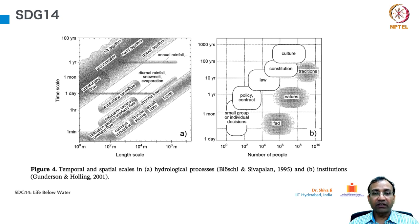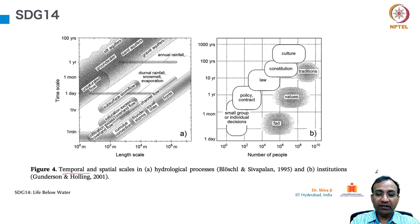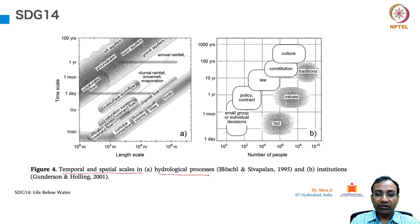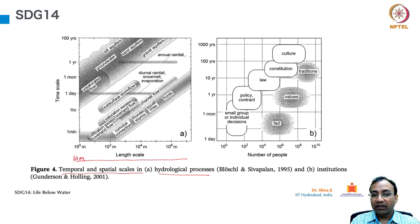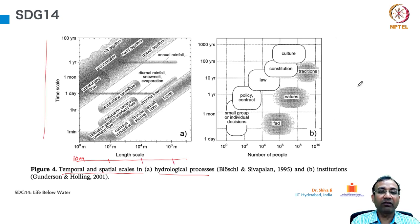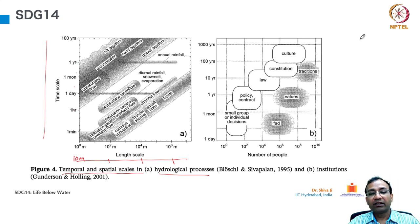This is an interesting table which talks about temporal and spatial scales in hydrological processes. The length scale goes from 10 to the power 0 (10 meters) to 10 to the power 6 meters. On the time axis we have 1 minute, 1 hour, 1 day, 1 month, 1 year, and 100 years. On what time scale and at what length scale do we call water bodies by certain names and what forms do they take?